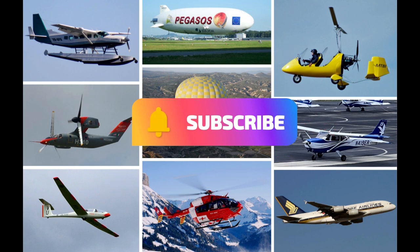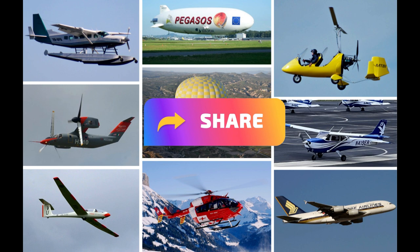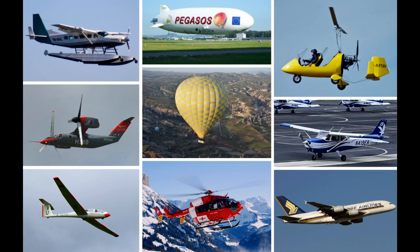Additional aircraft groupings include: (4) powered lift — a heavier-than-air aircraft capable of vertical takeoff, vertical landing, and low-speed flight that depends principally on engine-driven lift devices or engine thrust for lift, and on non-rotating airfoils for lift during horizontal flight; (5) powered parachute — a powered aircraft comprised of a flexible or semi-rigid wing connected to a fuselage, with the fuselage containing the engine, seat for each occupant, and landing gear; (6) rocket — an aircraft propelled by ejected expanding gas generated in the engine from self-contained propellants, not dependent on intake of outside substances; and (7) rotorcraft — a heavier-than-air aircraft that depends principally for its support in flight on the lift generated by one or more rotors, including gyroplane and helicopter.